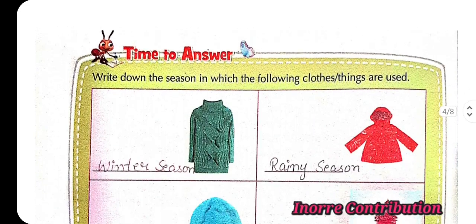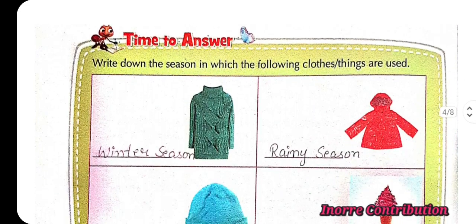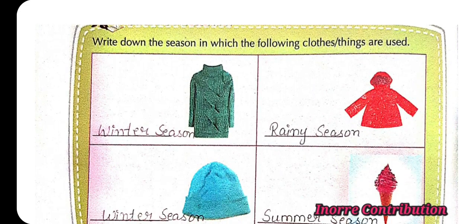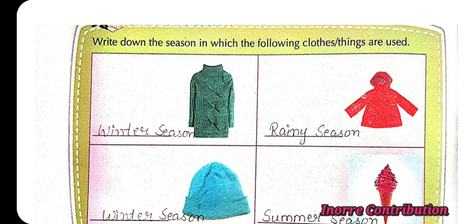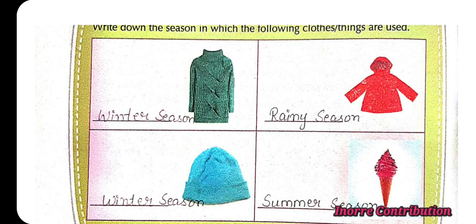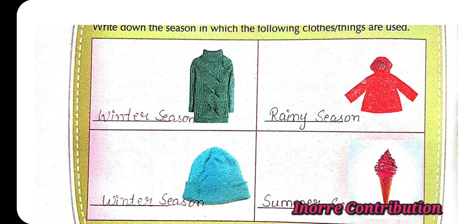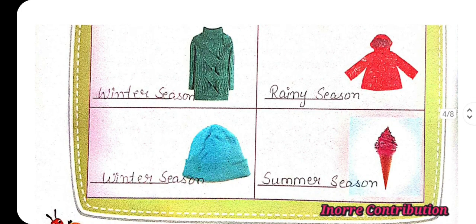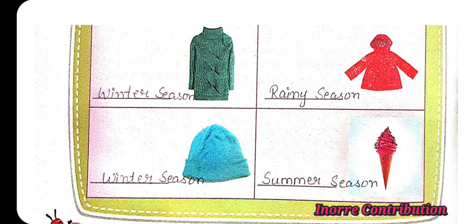Time to answer. Write down the season in which the following clothes and things are used. Winter season. Raincoat — rainy season. Woolen cap — winter season. Ice cream — summer season.